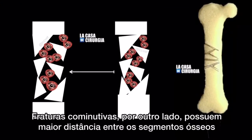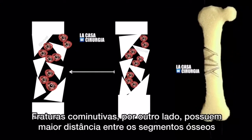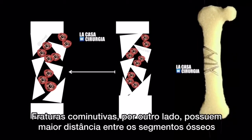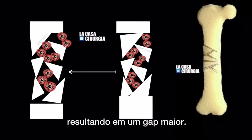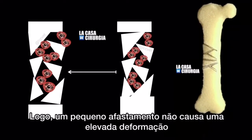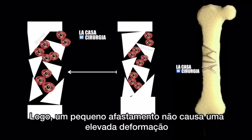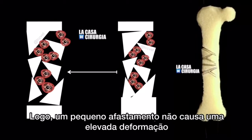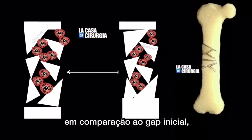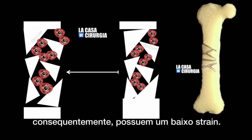Comminuted fractures, on the other hand, have a greater distance between bone segments, resulting in a larger gap. Therefore, a small displacement doesn't cause a high deformation compared to the initial gap, resulting in a low strain.